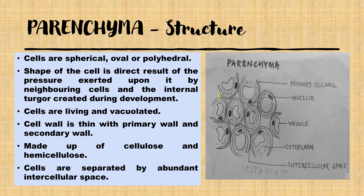Spongy parenchyma is present just above the lower epidermis and is loosely arranged with lots of intercellular space, which can communicate to the outside through the stomata. Parenchyma cells are either spherical, oval, or polyhedral in shape — their shape is directly proportional to their position, influenced by pressure from neighboring cells and internal turgor during development. Looking at the cell in detail, we find dense protoplasm, a marginally placed nucleus, and a big vacuole, which is very important as parenchyma cells are mostly storage in function.